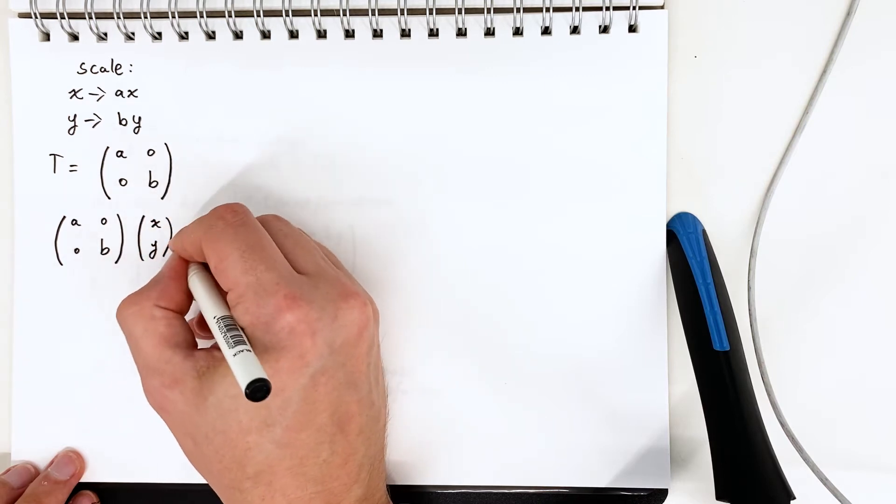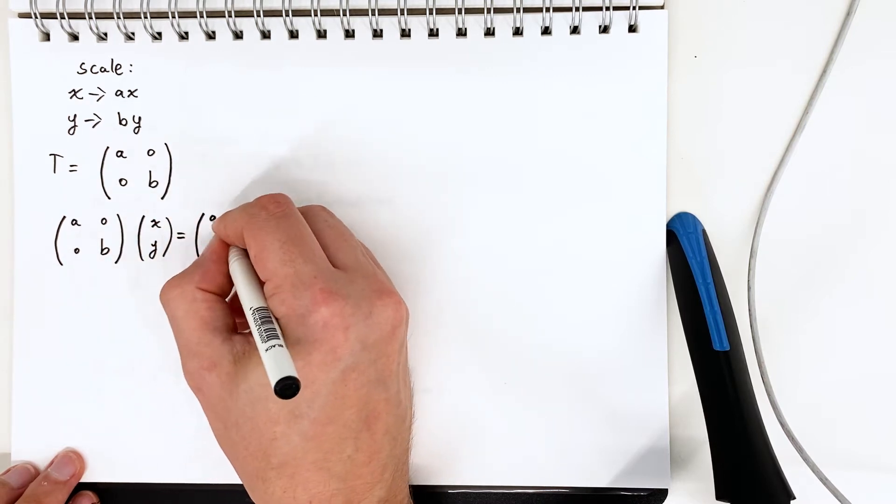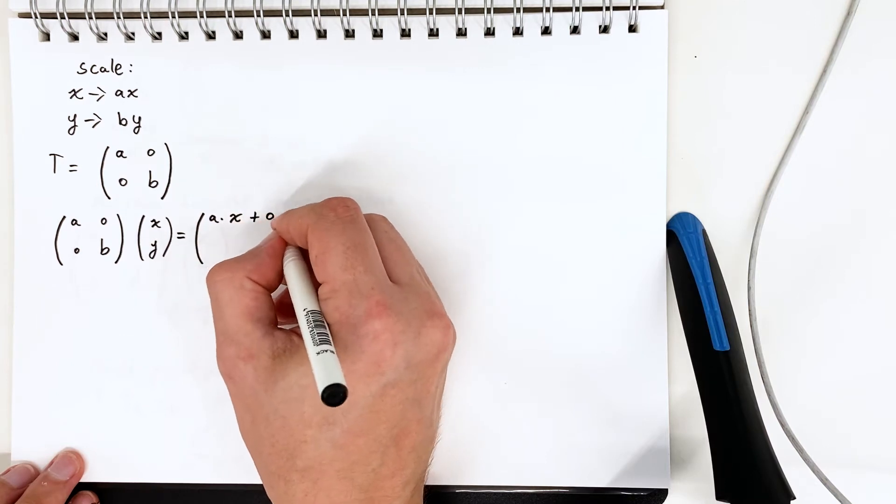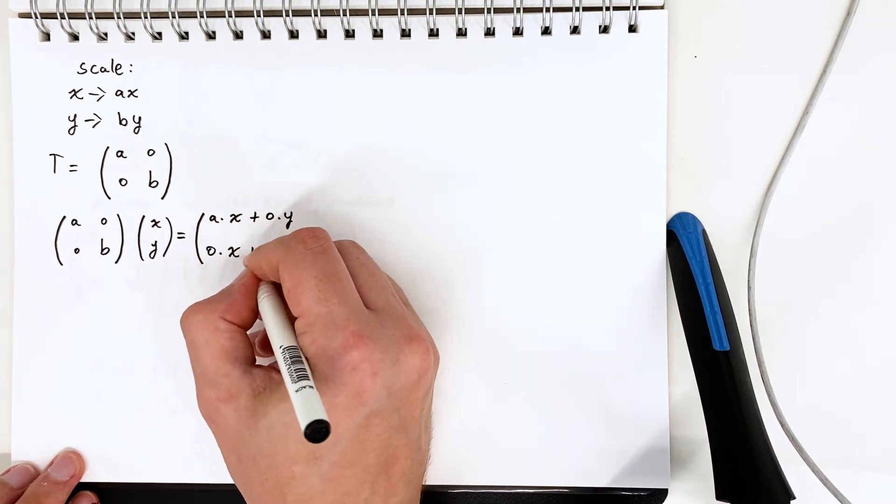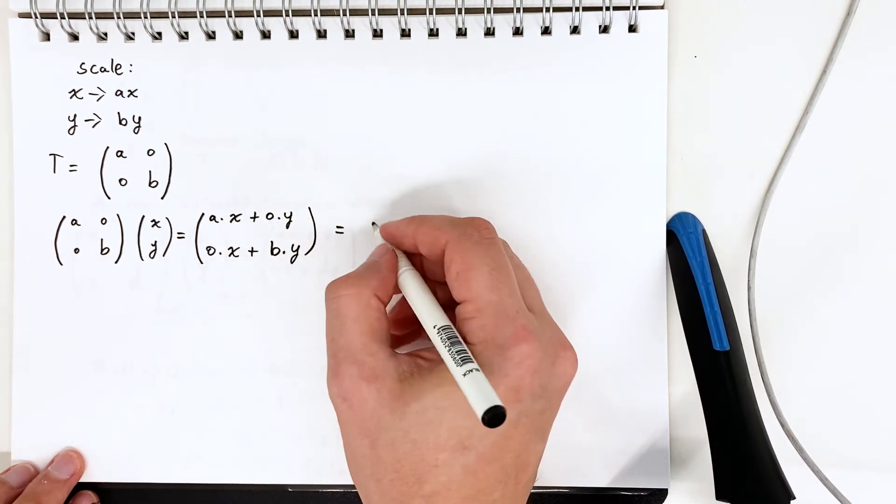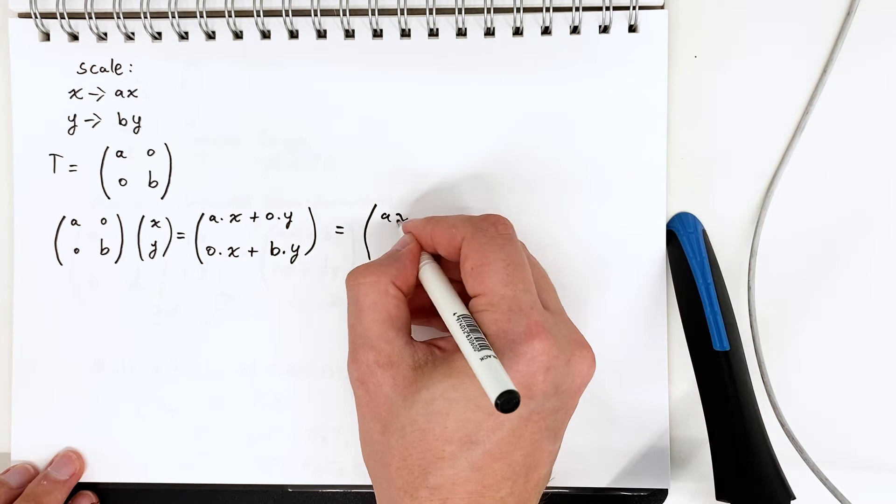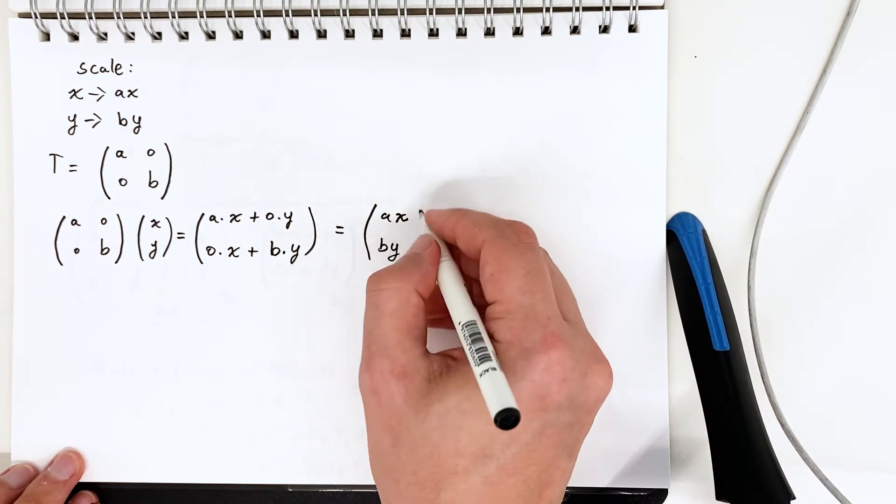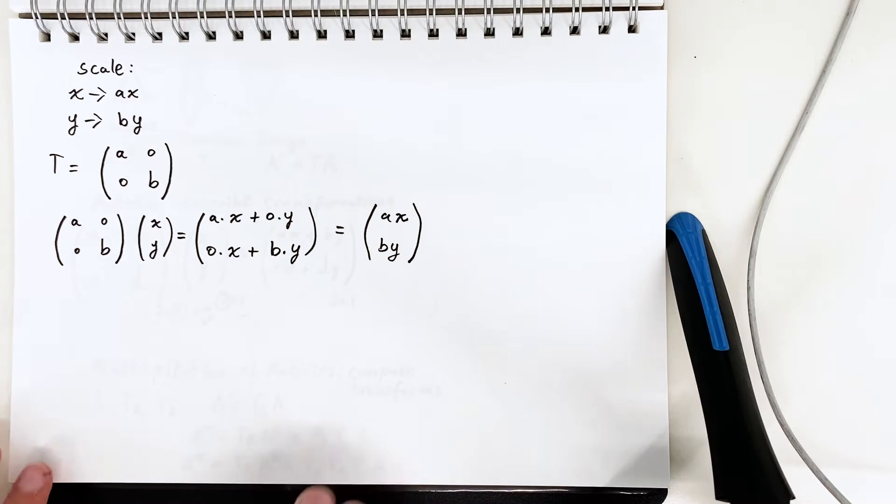So we take x, we want to send that to a times x and y wants to go to b times y. The transformation is represented with this matrix with a and b on the diagonal and zeros on the off diagonal. And we can see by the multiplication that that produces the desired result.